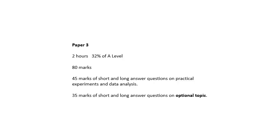The option topics are in Paper 3. Paper 3 is two hours, about a third of the A-level, worth 80 marks. Of those 80 marks, there's 35 marks on the optional topic.